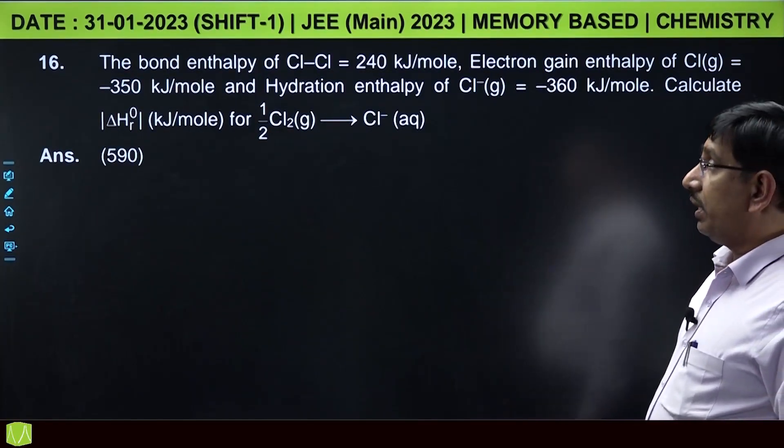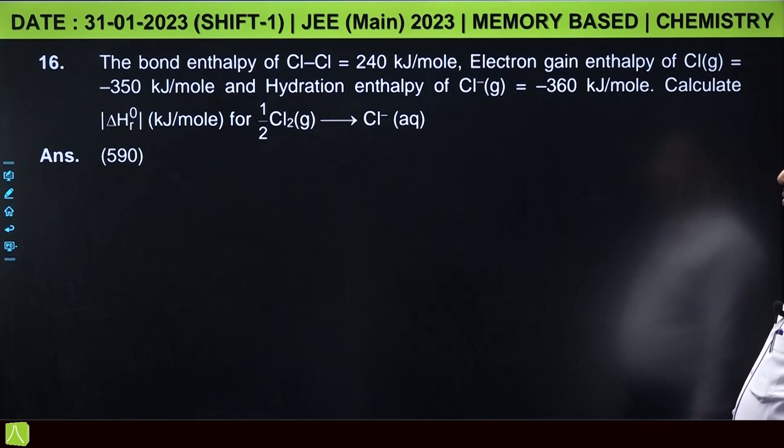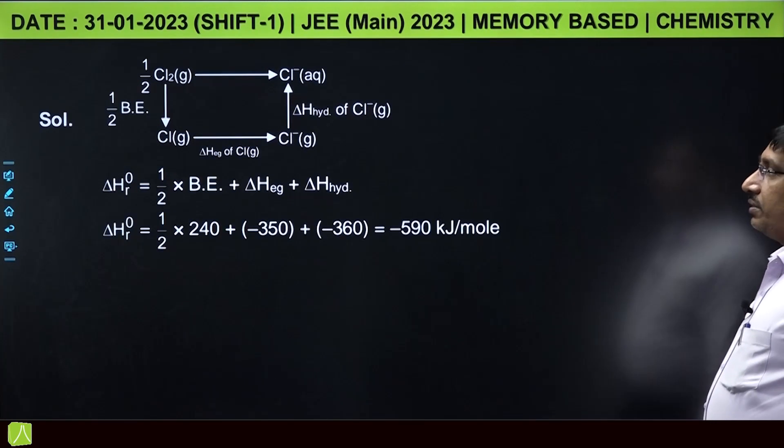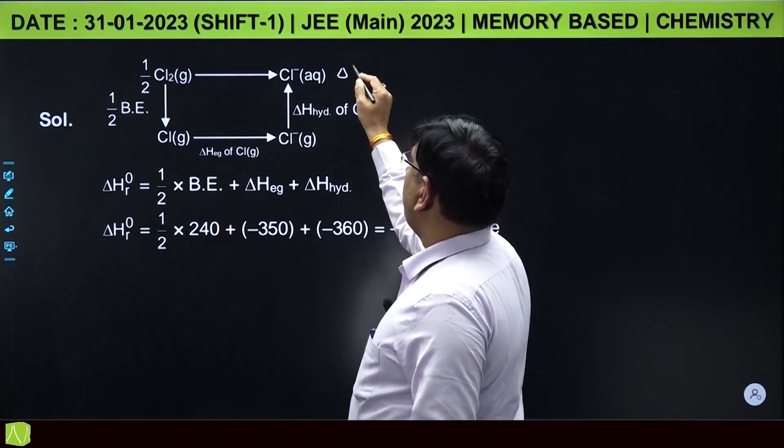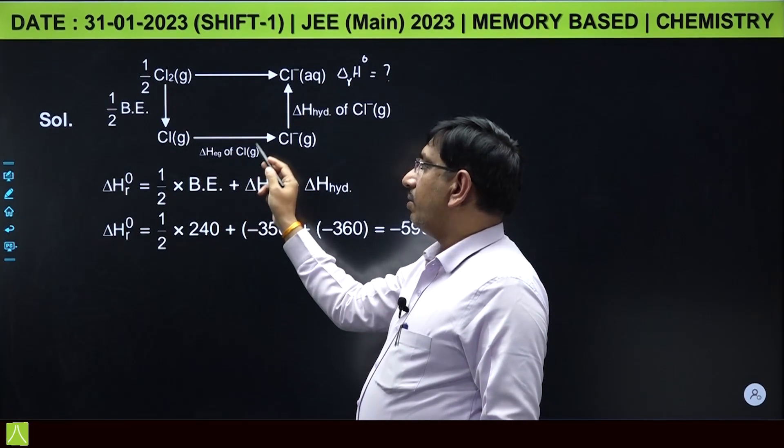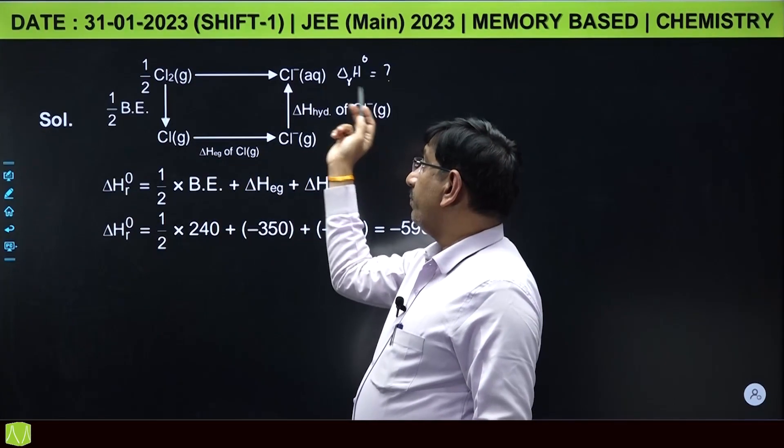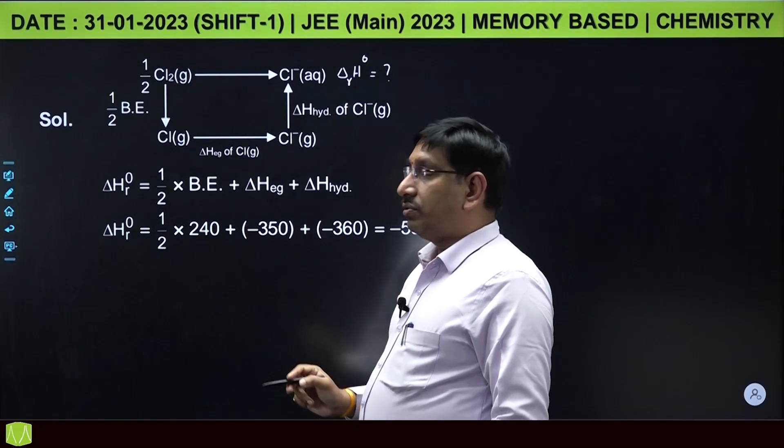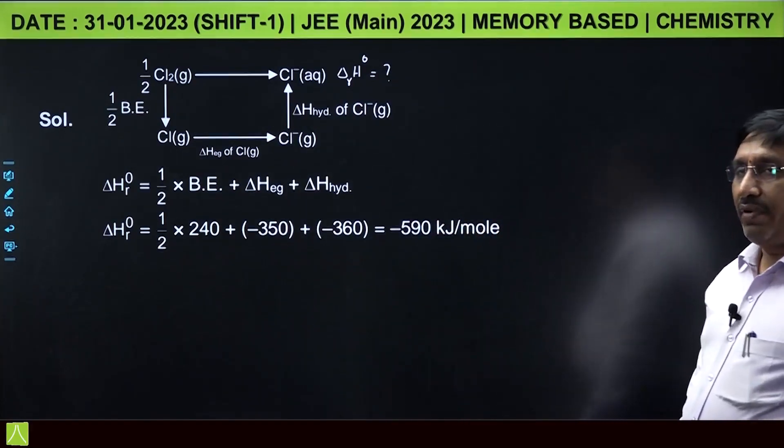This is from thermochemistry. The bond enthalpies of Cl-Cl bond is given 240 kilojoule per mole. Electron gain enthalpy is given minus 350 kilojoule per mole. Hydration enthalpy is also given minus 360 kilojoule per mole. Calculate enthalpy of the reaction: half Cl2 gives Cl minus. From Born-Haber cycle, standard enthalpy of the reaction is equal to half into bond dissociation enthalpy plus electron gain enthalpy plus hydration enthalpy. On substituting the data you will get minus 590 kilojoule per mole.